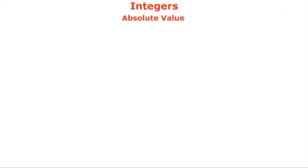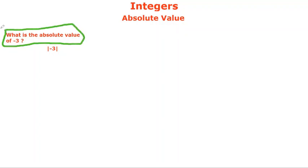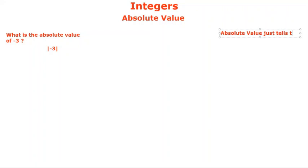Hello and welcome back everyone. Today we're going to continue with the same chapter and learn about a new subtopic: absolute value. Our first question will be: what is the absolute value of minus three? We write it as minus three with one vertical bar to the left and one vertical bar to the right. This notation represents the absolute value of minus three. Absolute value tells us the distance from zero.